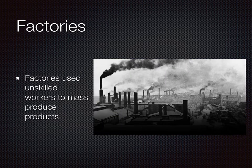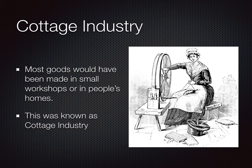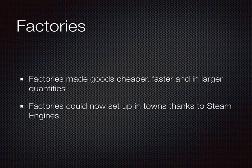That brings us to the rise of the Industrial Revolution and the topic of factories. Factories used machinery and unskilled workers to mass produce products. Prior to factories, most products were made in small workshops or in people's homes — this was known as the cottage industry. With factories, products could be made cheaper, faster, and in larger quantities.